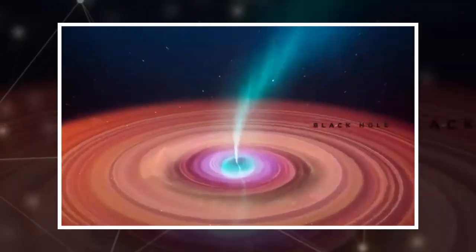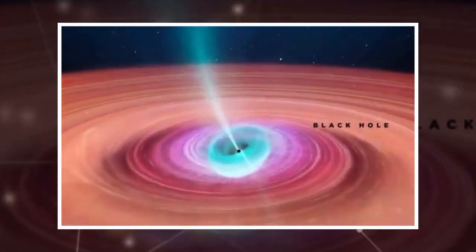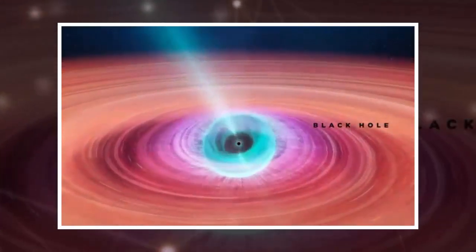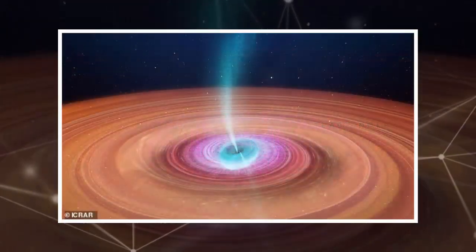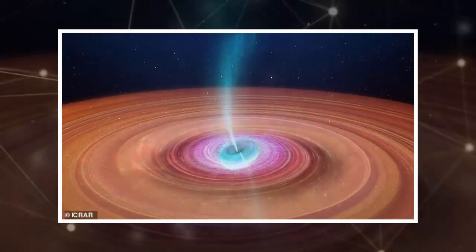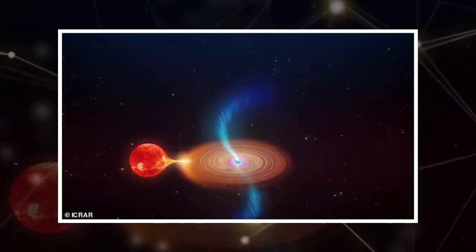What's different in V404 Cygni is that we think the disk of material and the black hole are misaligned. This appears to be causing the inner part of the disk to wobble like a spinning top and fire jets out in different directions as it changes orientation, he added.